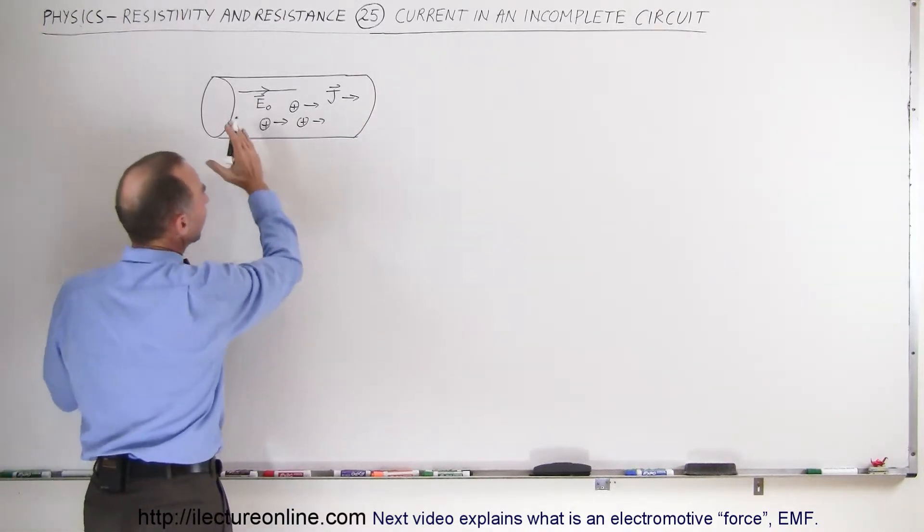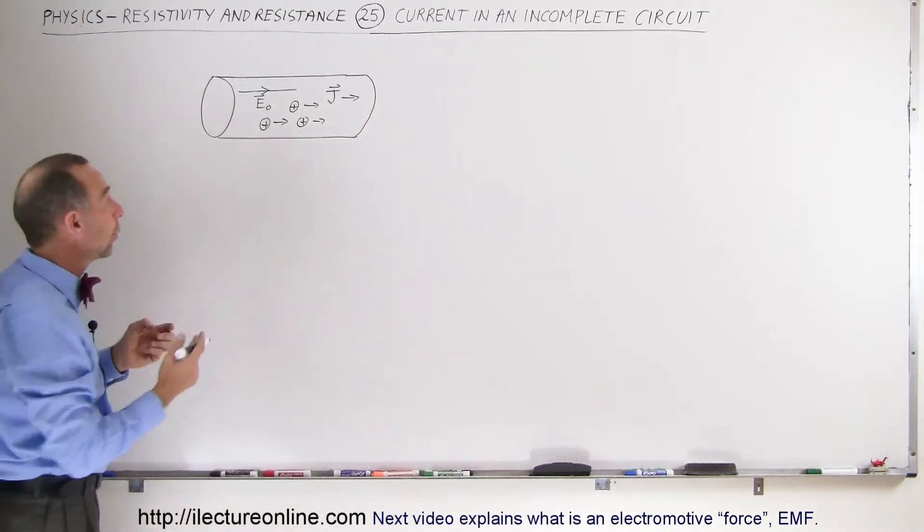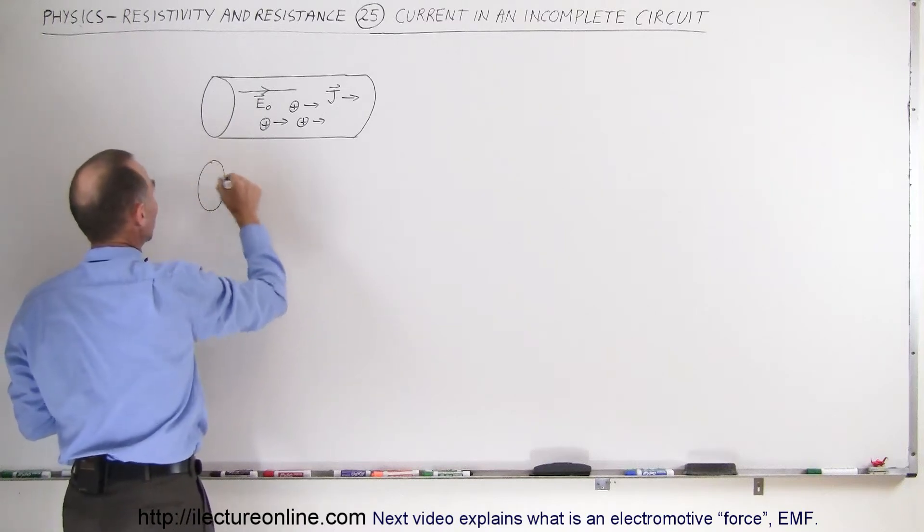So what happens when they have no place to go? We have an incomplete circuit, just a partial circuit, and they have no place to go. What happens is, well, in the next picture we can draw this.